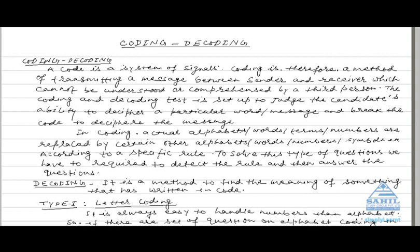Coding and decoding. First of all, we will discuss coding and then decoding. Coding is a system of signals, a method of transmitting a message between sender and receiver which cannot be understood by a third person. This is set up to judge the candidate's ability to decipher a particular word or break the code to decipher the message.